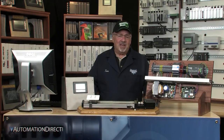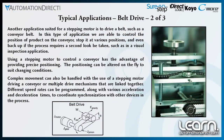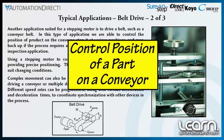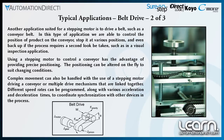Using a stepper motor to drive a conveyor belt is another typical application. In this type of application, we would be able to precisely control the position of a part on the conveyor, stop the part at various positions, back the belt up if the process required a second look be taken — such as a visual inspection — and then either move the part to an acceptance area or possibly stop it a short distance from the inspection point and then eject it into a rejection bin.